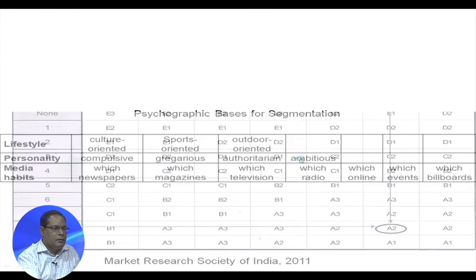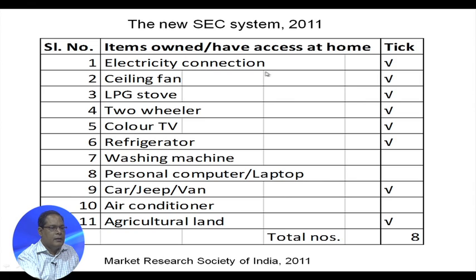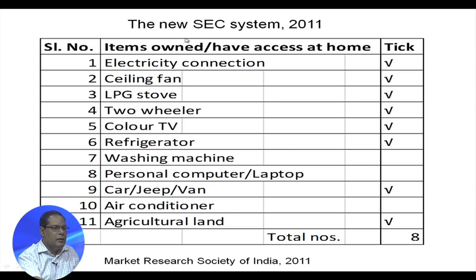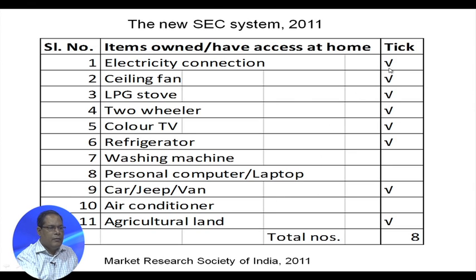We now come to the new Socio-Economic Classification (SEC) system, done in two parts. The first part includes items like electricity connection, ceiling fan, LPG gas stove, two-wheeler, colour TV, refrigerator, washing machine, personal computer or laptop, car/jeep/van, air conditioner, and agricultural land. Surveyors visit a person's home and place tick marks based on whatever durables the person has procured, and whether they own agricultural land. In our example case, the surveyor found the person has 8 out of 11 durables.